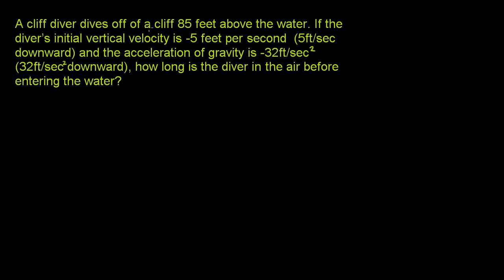A cliff diver dives off a cliff 85 feet above the water. The diver's initial vertical velocity is negative 5 feet per second — going downward. The acceleration of gravity is negative 32 feet per second squared, meaning after every second, you're going 32 feet per second faster in the downward direction. How long is the diver in the air before entering the water?